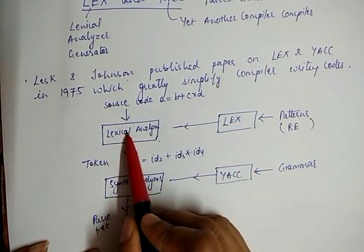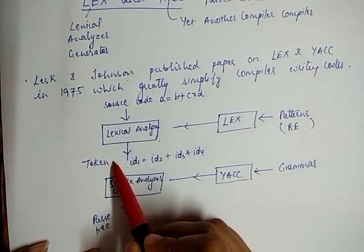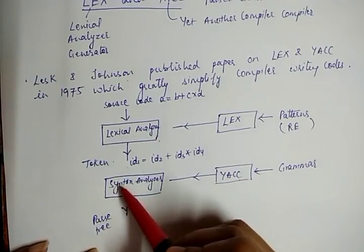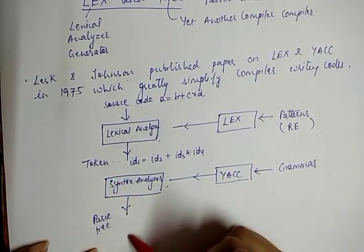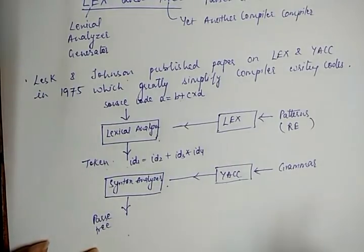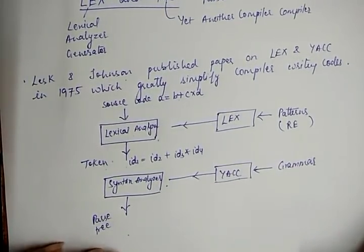In summary, Lex is used in the lexical analysis phase to generate tokens, and Yacc is used in the syntax analyzer phase, combining with the tokens to generate the parse tree as the output of the syntax analyzer. Next, we see an example of how a particular program is compiled using Lex and Yacc.